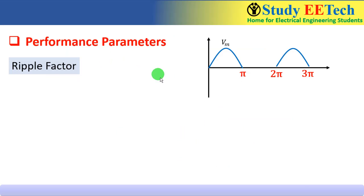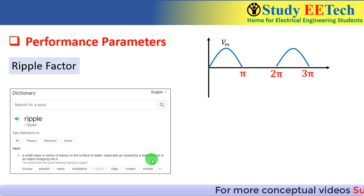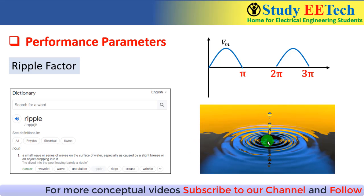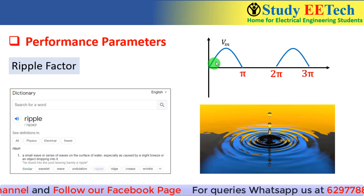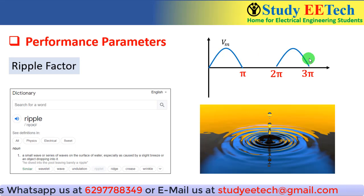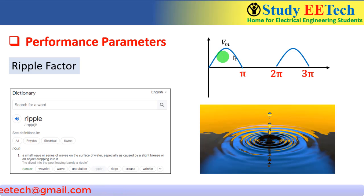First we will take the ripple factor. Before coming to the mathematical expression, let us understand it physically. The dictionary meaning of ripple is a small wave or series of waves on the surface of water, especially caused by a slight breeze or an object dropping into it. When you drop something in water you see some waves — that is the ripple. So here in the half wave rectifier we get this sort of output voltage, but our requirement is a steady one and we do not get that. We get some change in the output voltage, and how much change is involved in this waveform is our interest.